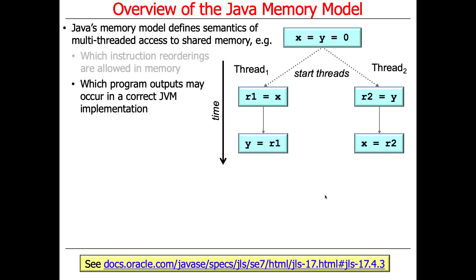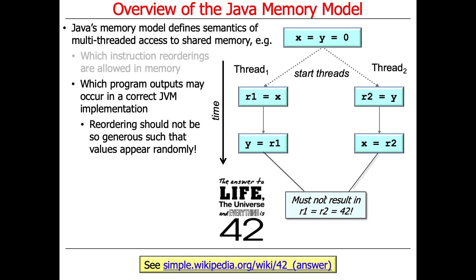The specification also says a few other things. For example, with variables r1, r2, x, and y: r1 equals x, r2 equals y, y equals r1, x equals r2. The specification says you can't randomly reorder things to the point where results make no sense — you won't end up with some bizarre result like 42. The results have to be something sensible, but they don't have to be what you'd expect just by reading the code statically in a linear way.